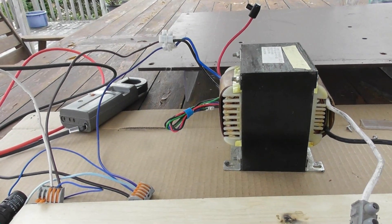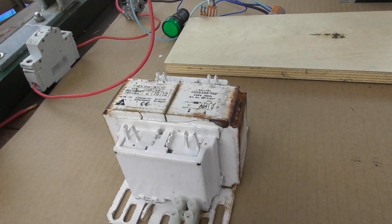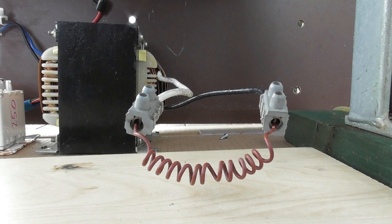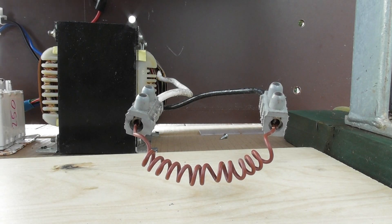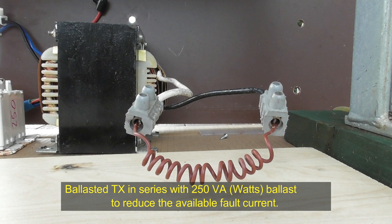I've got this set up at the moment, just a transformer straight on the mains. I want to reduce the fault level. I'll put a 250 VA ballast in series. I've reduced the fault level by putting the reactor in series. Let's have a quick look what happens.